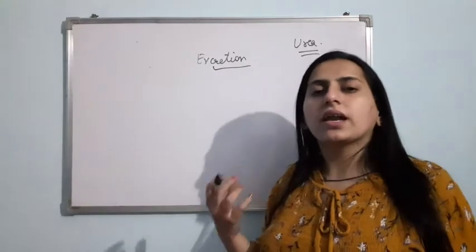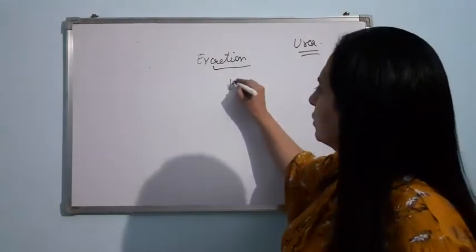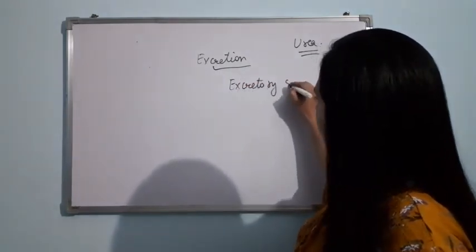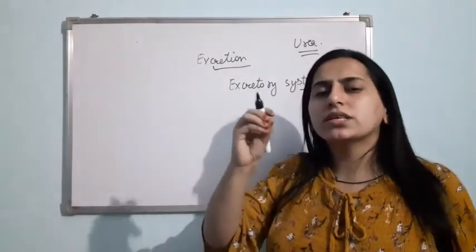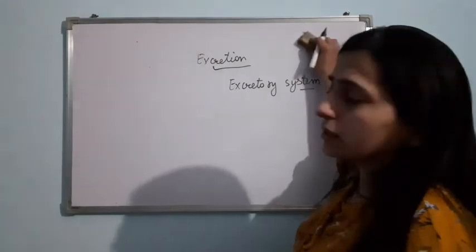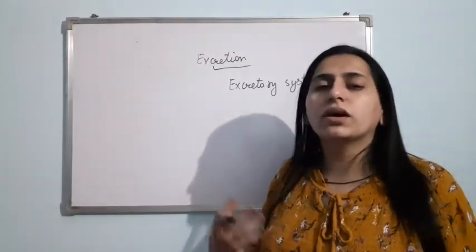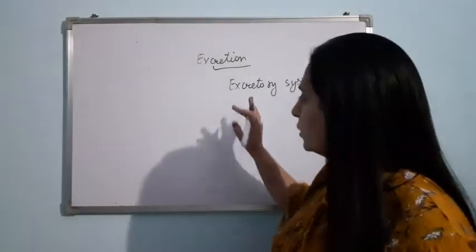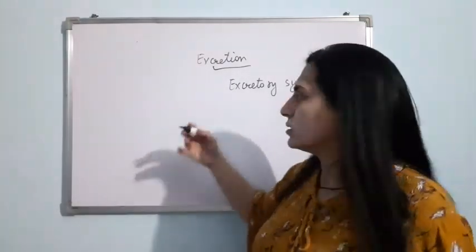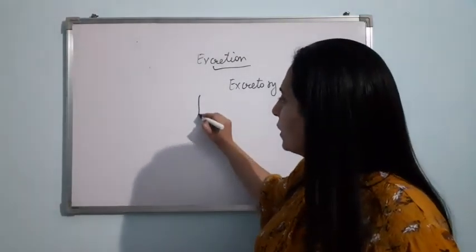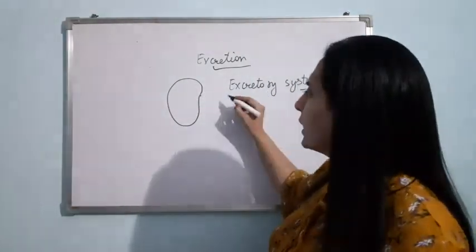For this process, we have a system known as the excretory system. This urea, or simply put, this harmful waste product, is present in the blood. There is a need to remove the urea and the harmful nitrogenous waste. For that, we have the excretory system. Our excretory system has a pair of kidneys. These are bean-shaped — you have seen a rajma bean; the kidney is somewhat like that.